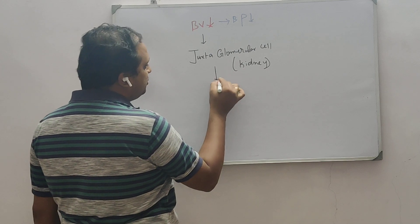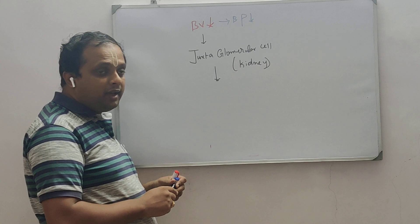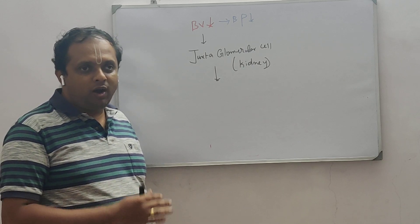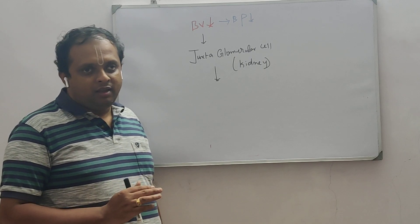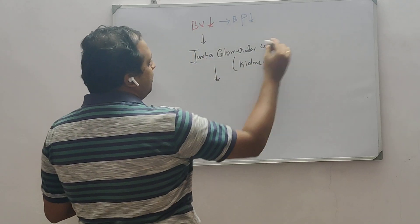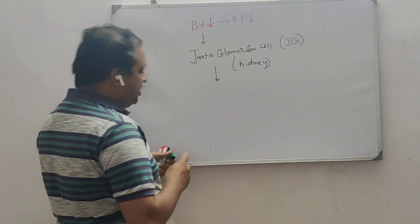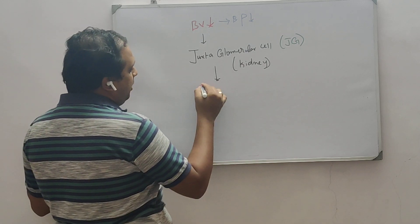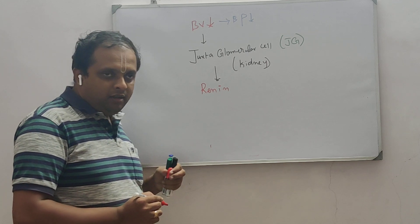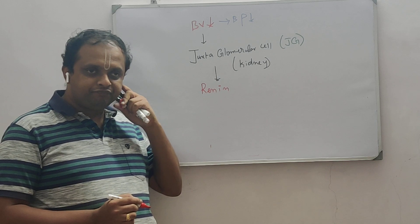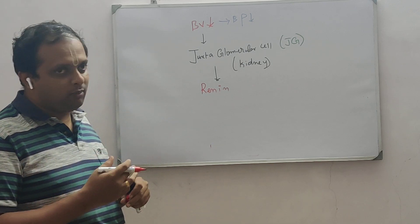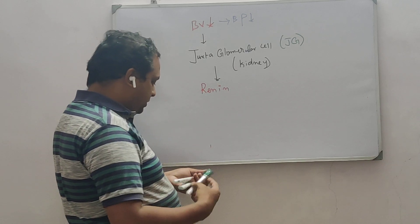In response to this stimulus, the juxtaglomerular cells of the kidney — note that the kidney has an endocrine activity in addition to its main role in excretion — will produce a hormone called renin (R-E-N-I-N). Be mindful of the spelling: this is renin with a single 'n', distinct from rennin (R-E-N-N-I-N), the digestive enzyme. Renin is a hormone involved in this pathway.